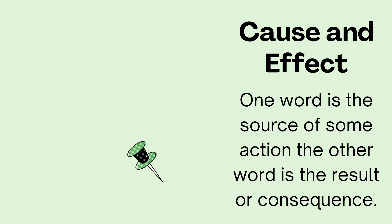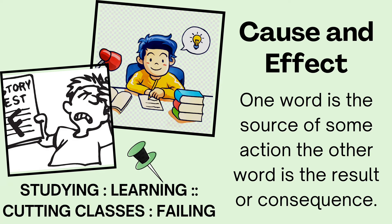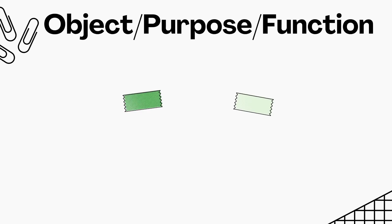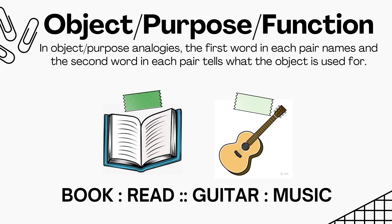The third one is cause and effect. One word is the source of some action, and the other word is the result or consequence. For example, studying is to learning as cutting classes is to failing. Next, we have object, purpose, and function. In object-purpose analogies, the first word in each pair names an object, and the second word tells what the object is used for. For example, book is to read as guitar is to music.